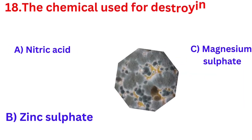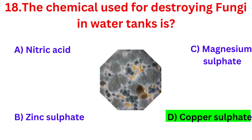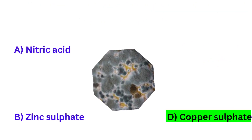The chemical used for destroying fungi in water tanks is? Option D. Copper sulphate.